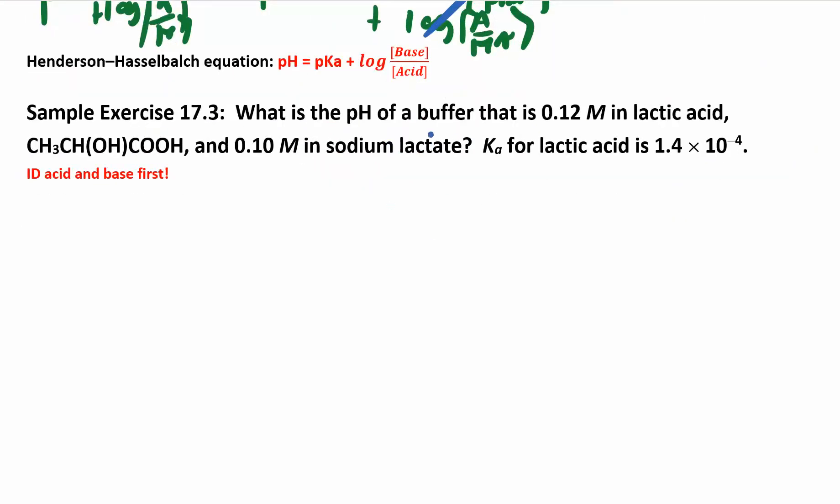What's the pH of a buffer? So whenever you see buffer, think this equation, think Henderson-Hasselbalch. That is 0.12 molar in lactic acid. And they give you the whole formula. Sometimes they'll give you the name, and that's really easy because then you know that that's the acid concentration. So you can write acid over here, 0.12. And then base is the other one, the sodium lactate, 0.10. Sometimes that's the hardest part, trying to figure out who's the acid, who's the base. How can you tell the difference? The acid's going to have an extra H plus. Remember that from chapter 16.